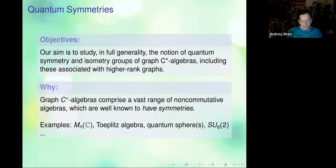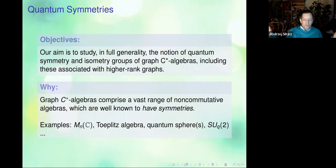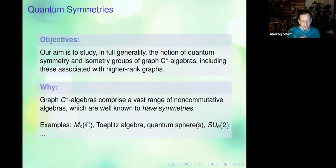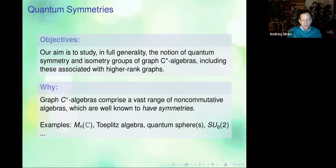The basic examples include the matrix algebra, Toeplitz algebra, multiple quantum spheres starting with the two-dimensional ones, and of course SUq(2). You can go on with many other examples of things that, as C*-algebras, are graph C*-algebras, but we know them also on some different level — like quantum spheres or SUq(2) — which have some additional structure.